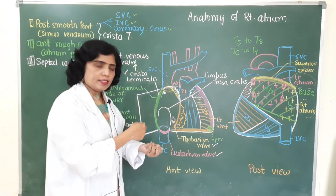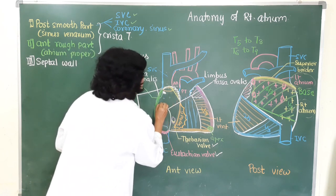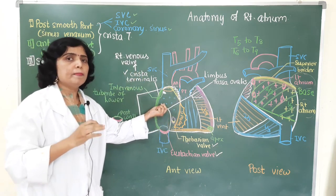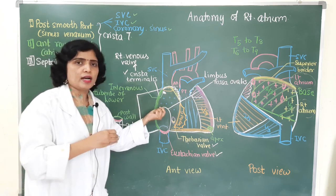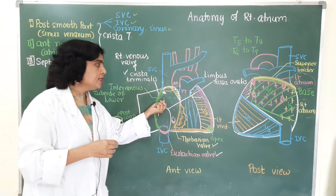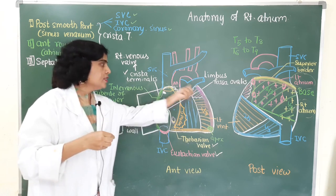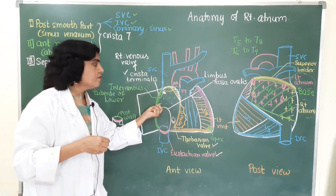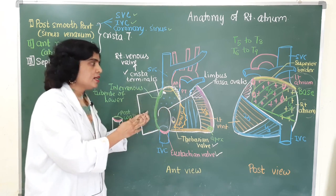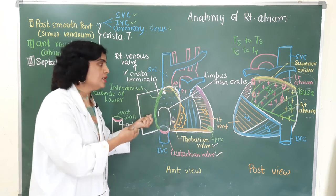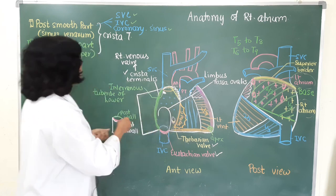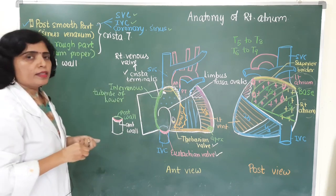In addition to these three main openings, there are minute openings on the posterior surface of the right atrium called the foramina venarum minimarum, through which small veins of the heart called venae cordis minimae open. These are present in all four chambers of the heart but are more numerous in the right chambers, ensuring better blood supply to the right chambers. This is why myocardial infarctions are more common in the left chambers of the heart.